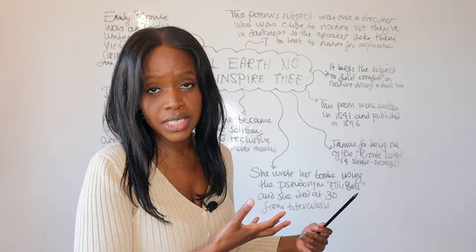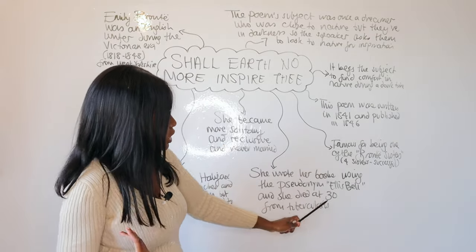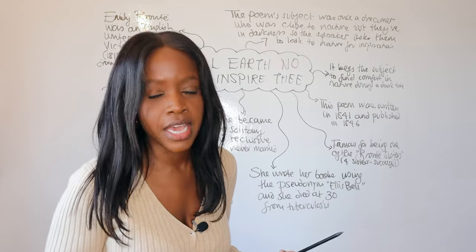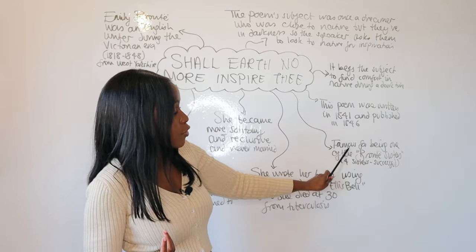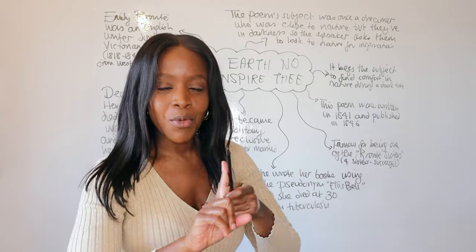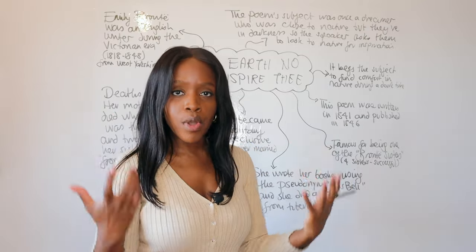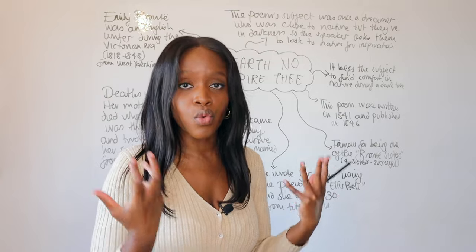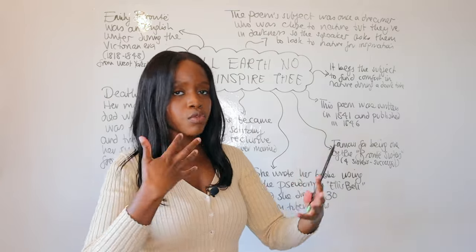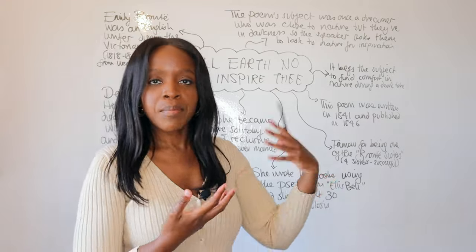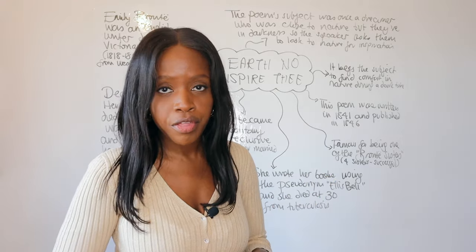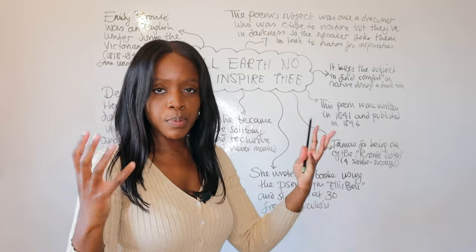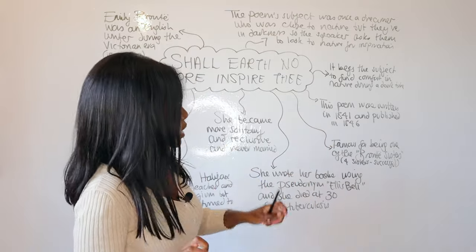Not only did tuberculosis kill her two sisters, but eventually Emily Brontë also succumbed to the illness at 30 and died a very early death. When it comes to what she is famous for, she is known for two things: first, she is one of the Brontë sisters — wildly successful women writers from her family. Second, Emily Brontë is the author of perhaps her most famous book, Wuthering Heights, a gothic piece of fiction. She also wrote many poems, one of which we are studying today.